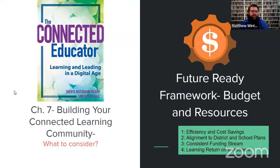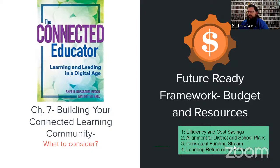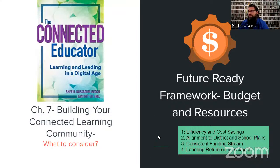Chapter seven is about building your connected learning community — what different things to consider. And then we're doing the Future Reading Framework: budget and resources this week. The four questions are efficiency and cost savings, alignment to district and school plans, consistent funding streams, and learning return on investment. If you're going 'I don't know where my district's budget is,' don't worry. The digital teaching and learning grant — the DTL grant — in the state of Utah has some great resources for both folks in this class and the general public to look over on all four of these counts.